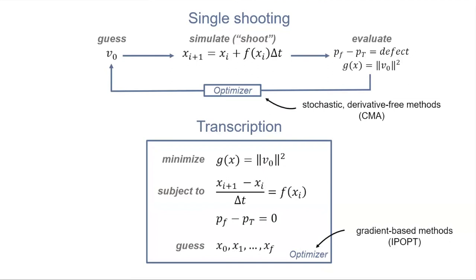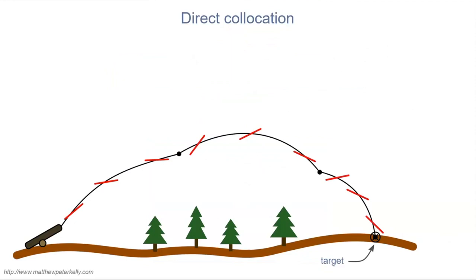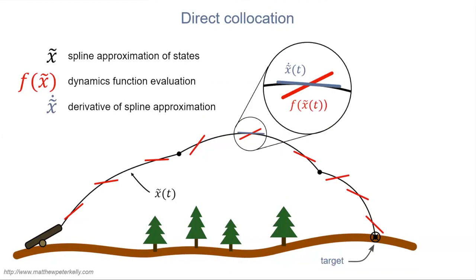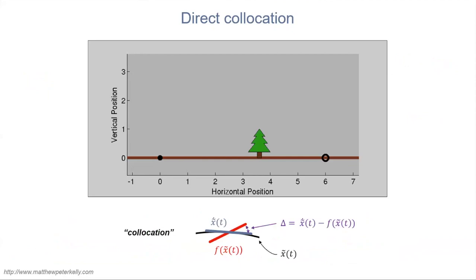With transcription, we prefer gradient-based optimization methods, which are better suited for the large number of variables and constraints involved. Direct collocation is another way to interpret the transcribed optimal control problem. In direct collocation, we start with a spline approximation of our state's trajectory, x tilde. At certain points along the trajectory, we evaluate our dynamics function and also calculate the derivative of the spline approximation. The difference between the dynamics function evaluation and the spline derivative represents error in the dynamics — enforcing consistency at these collocation points is what gives direct collocation its name. Setting this dynamics error to zero yields the same constraints as transcription, so the methods are equivalent.